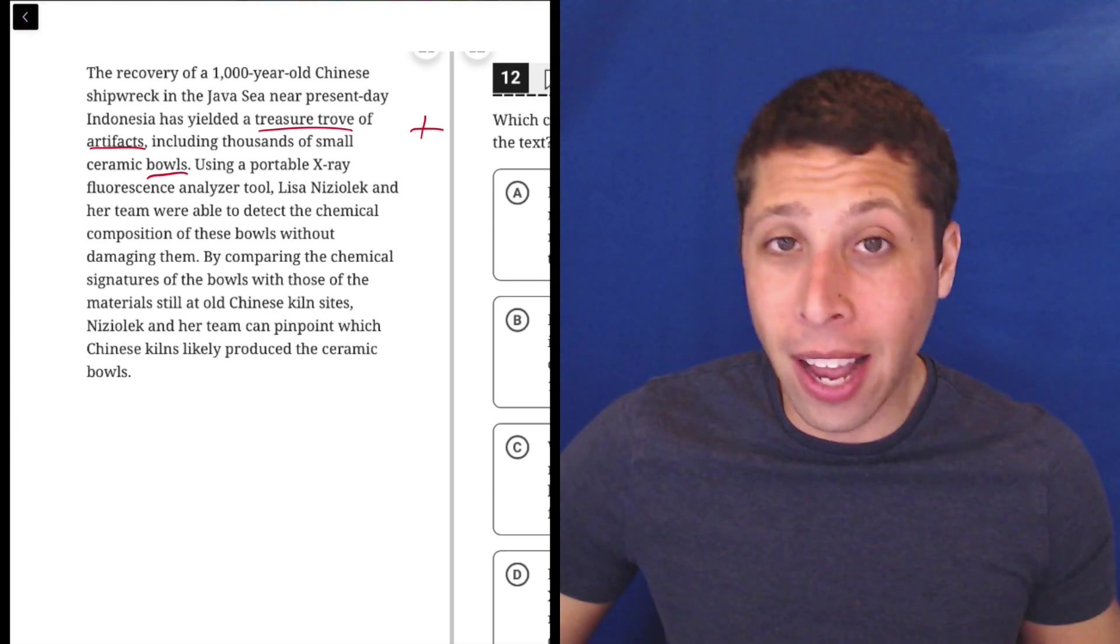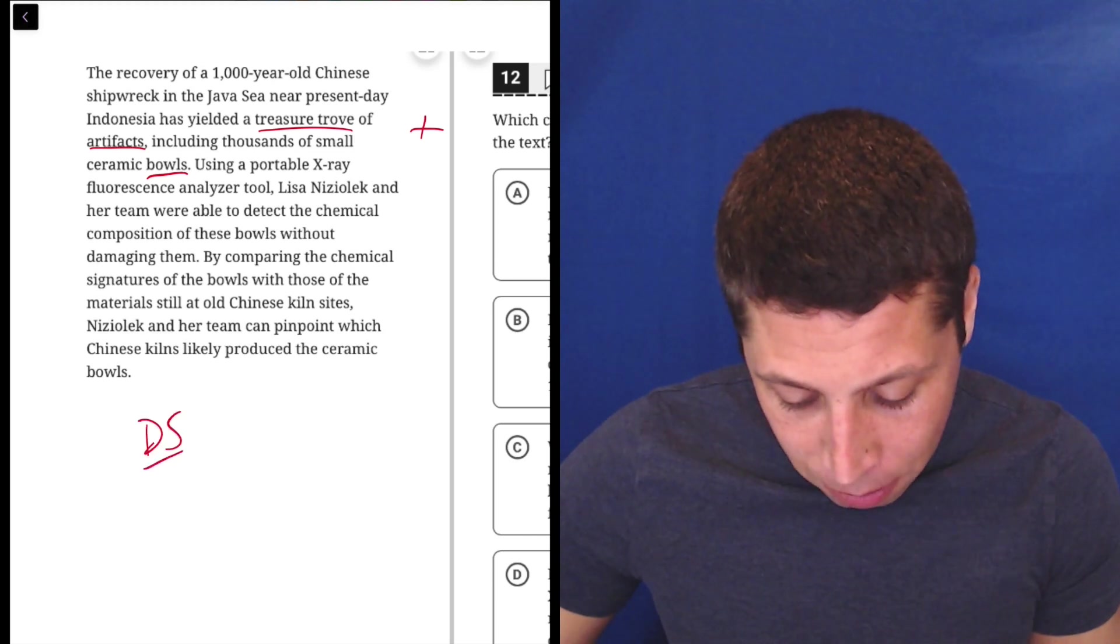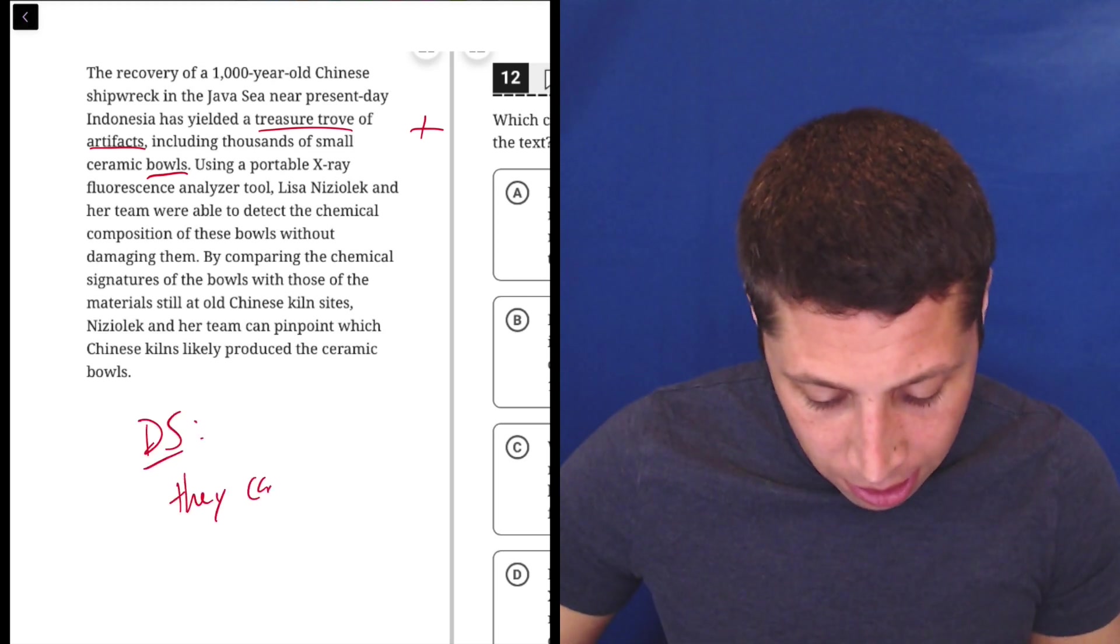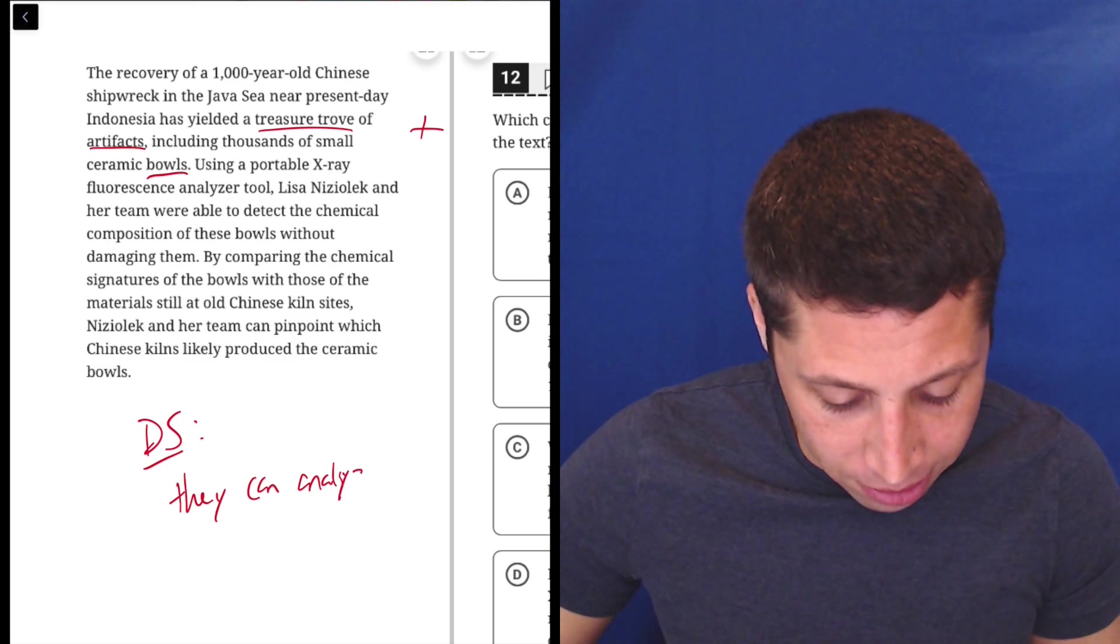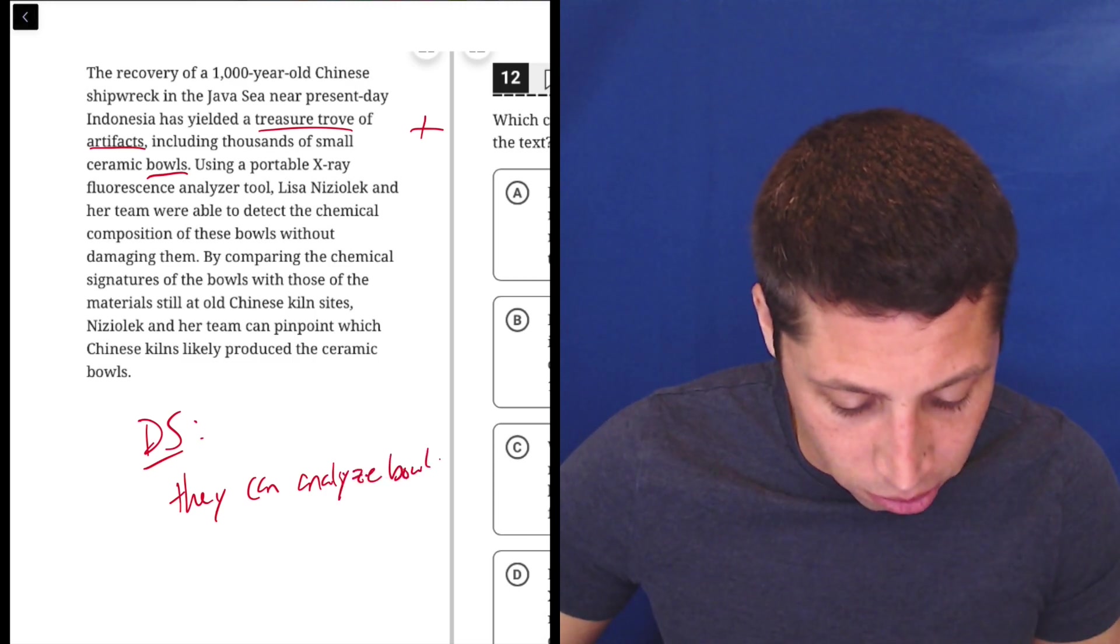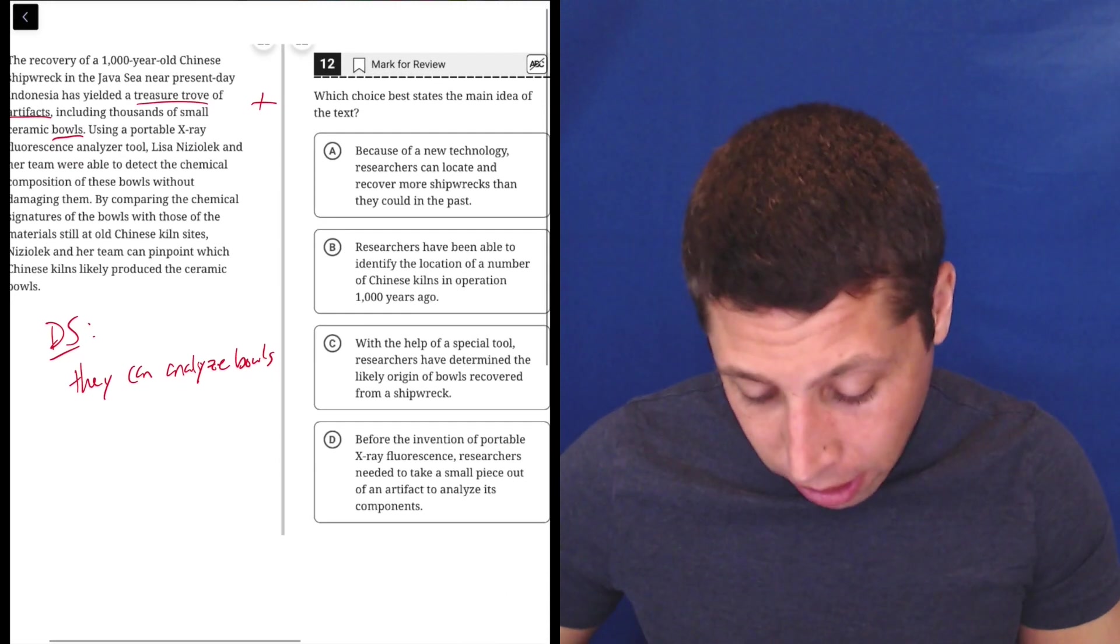So, look, a lot of science-y technical stuff in there. What's my dumb summary? They can analyze the bowls. Let's see if we need more than that.